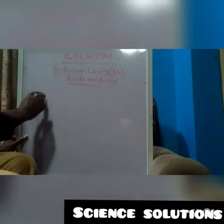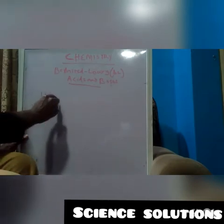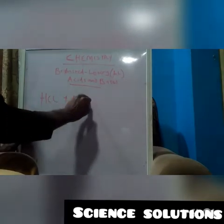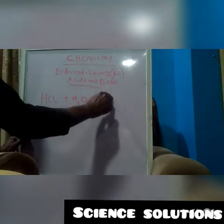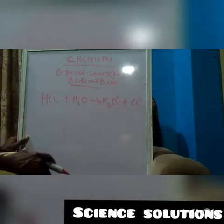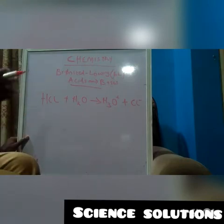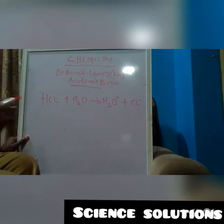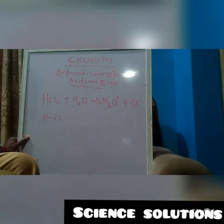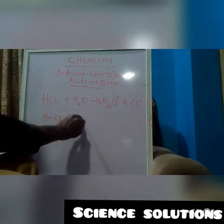I'm going to take an example of HCl reacting with H2O, water, to give us H3O plus and Cl minus. Now if you look carefully at this equation, you would notice one thing. We want to identify which is the acid, which is the base in this equation. So I'm just going to split this here in this manner to show the bonds holding the H2O together and I'll split water in this manner.